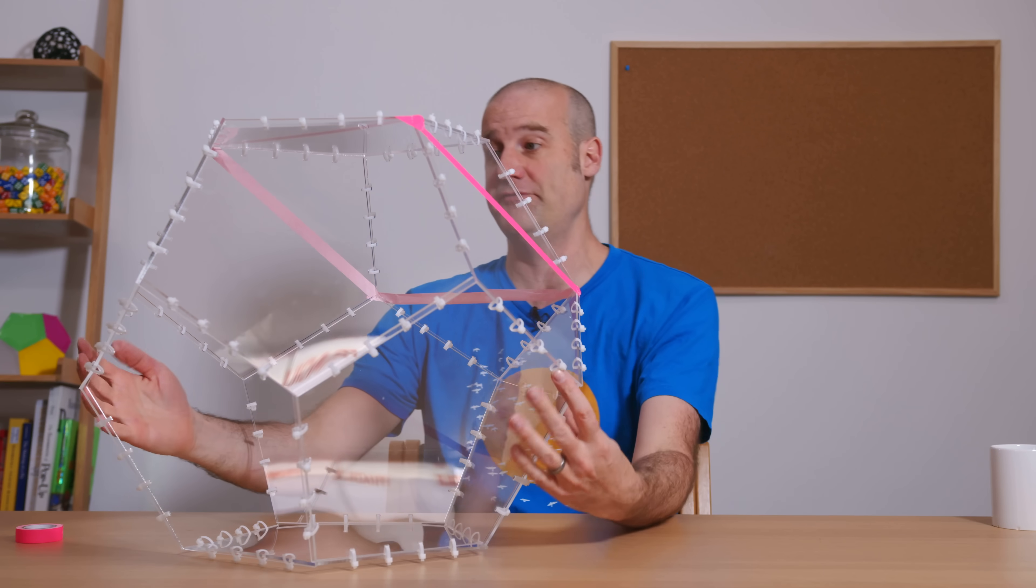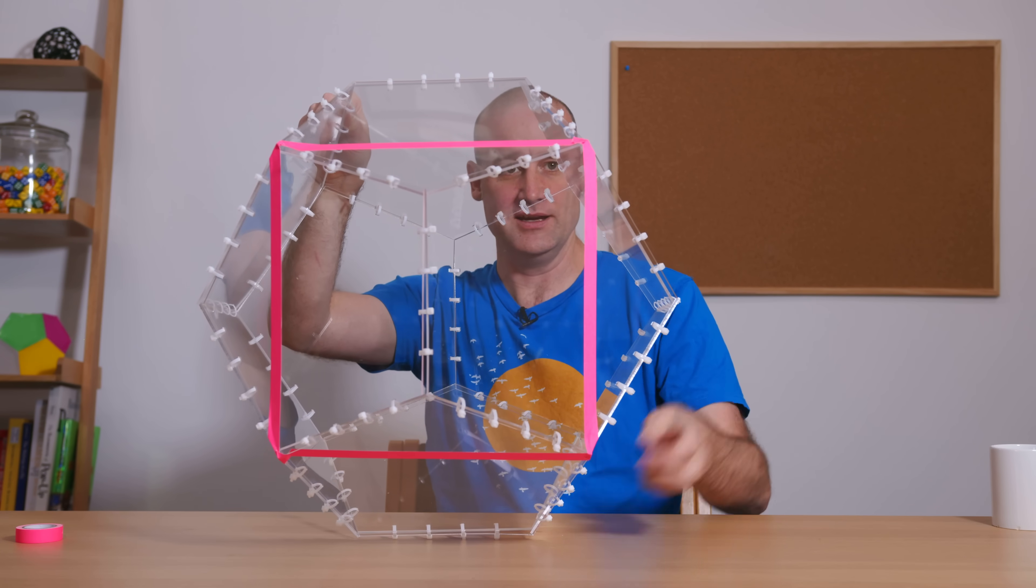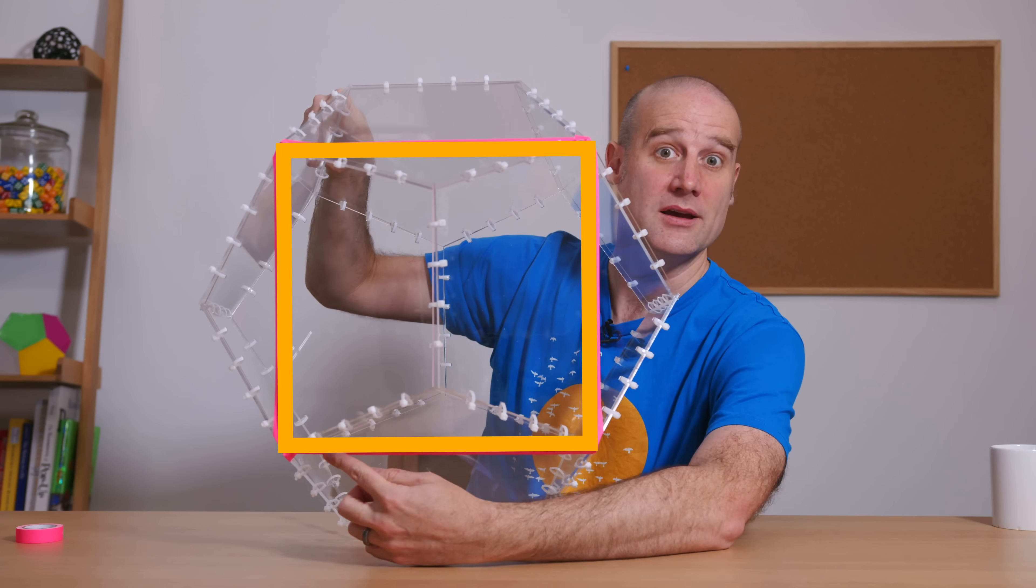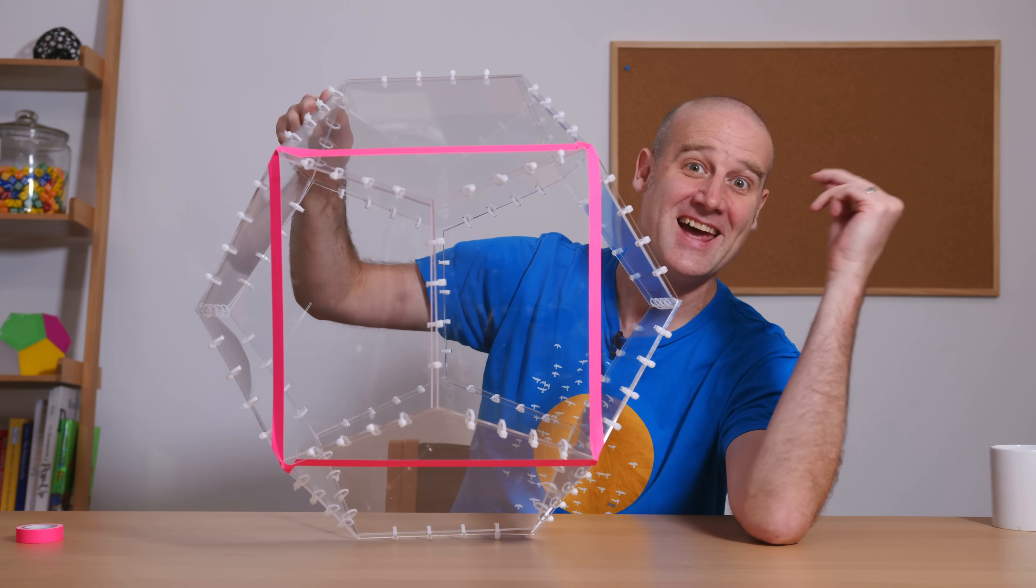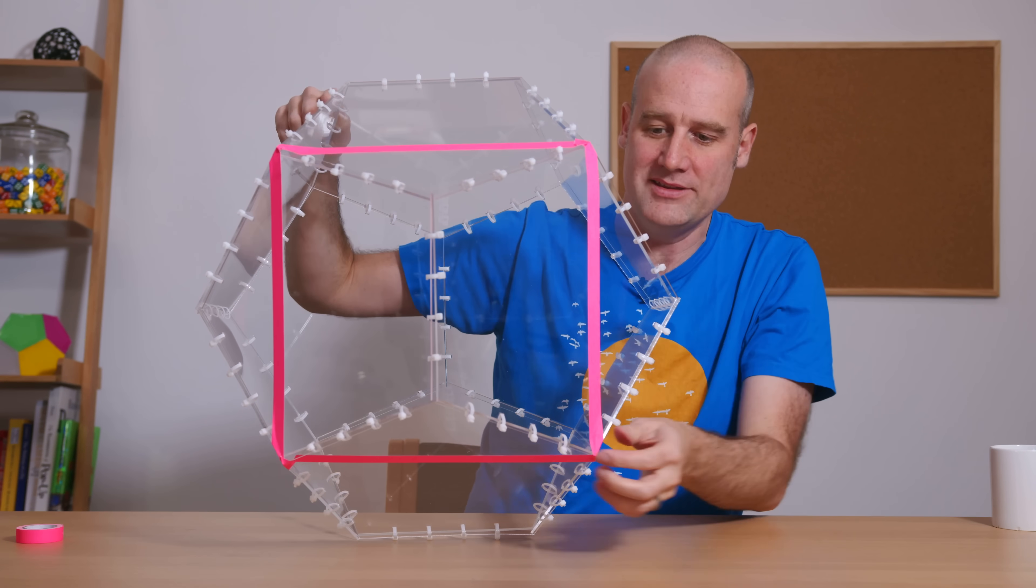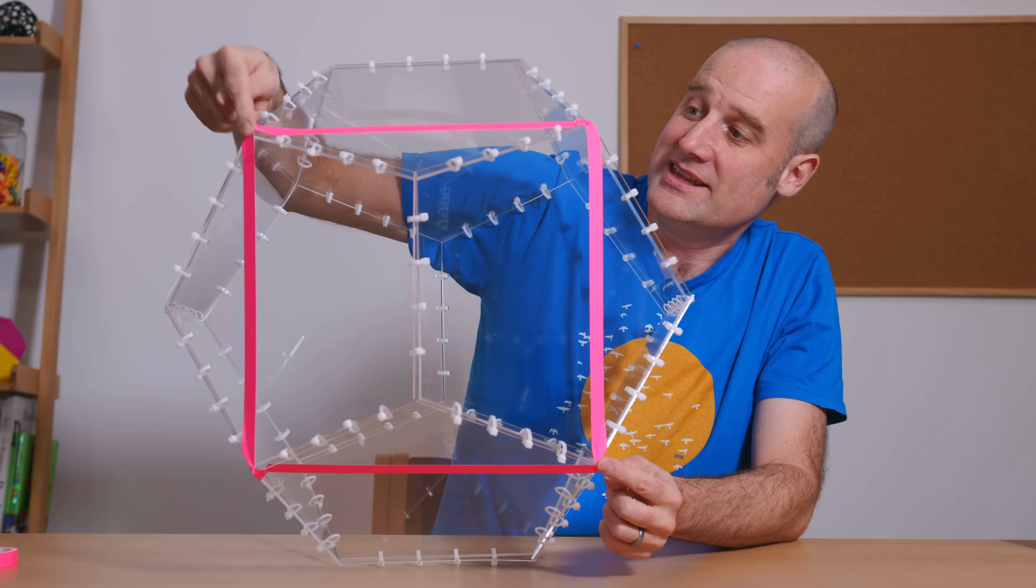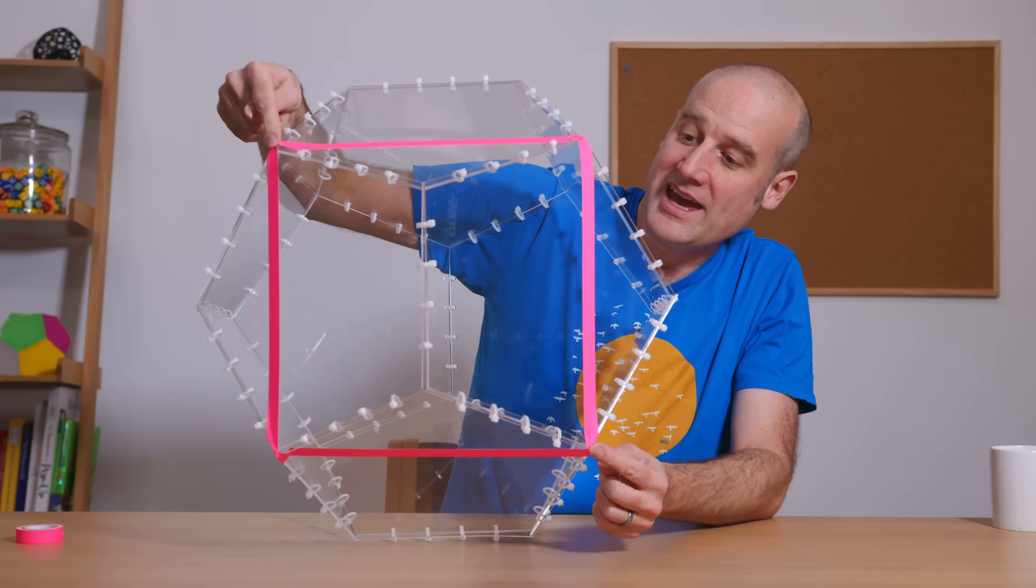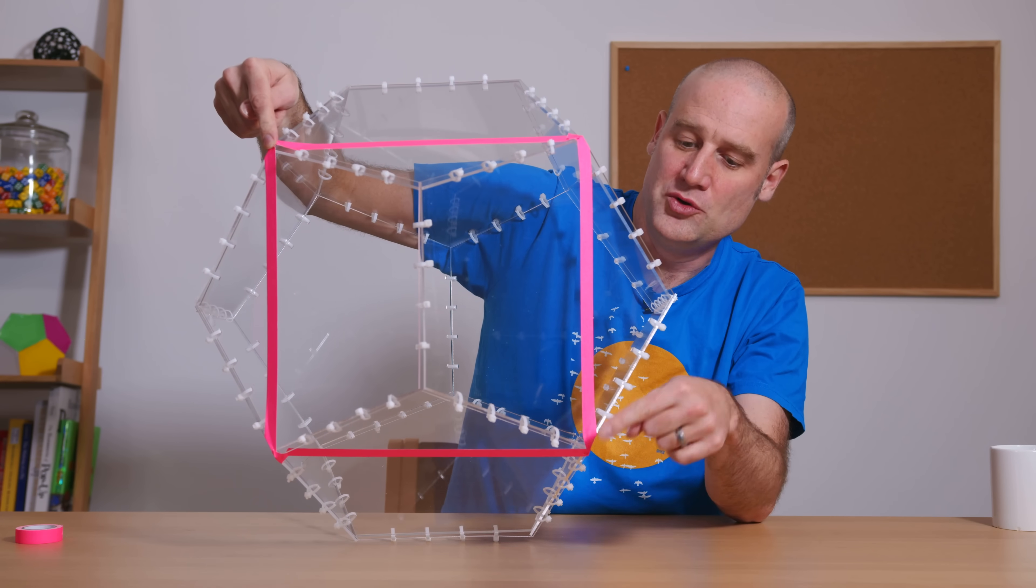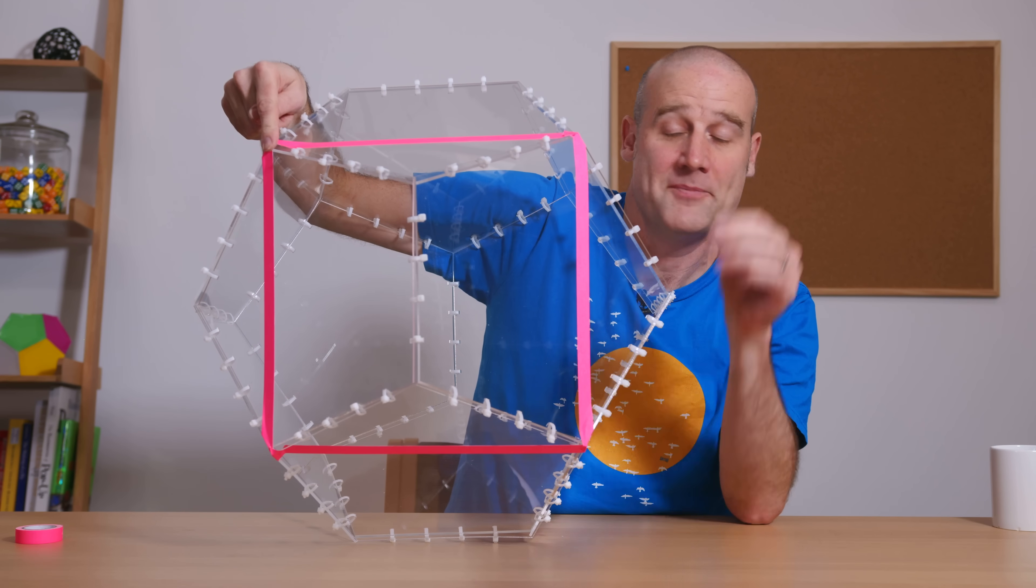All right. So I've labeled four of the face diagonals, not the space diagonals, the face ones. And those four there, you can see, make a perfect square. So there is a square hidden inside a regular dodecahedron, which is why this space diagonal from there to there is root 2 times the golden ratio. Amazing.